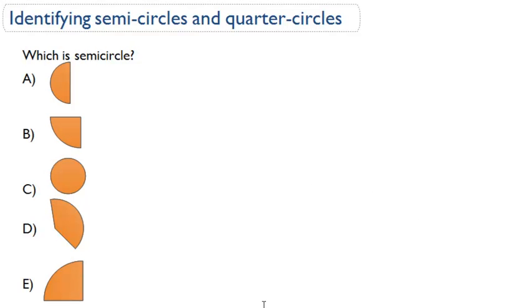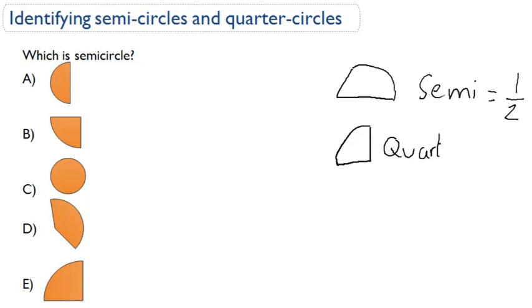Hey friends, this skill is identifying semicircles and quarter-circles. If you remember from the topic overview, we went over what a semicircle was. Semicircle—semi means one-half, so that's half a circle. And then a quarter-circle, which looks something like this. Quarter equals one-fourth. All right, so the first question for this skill asks us which is a semicircle.